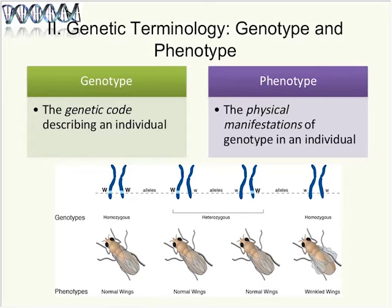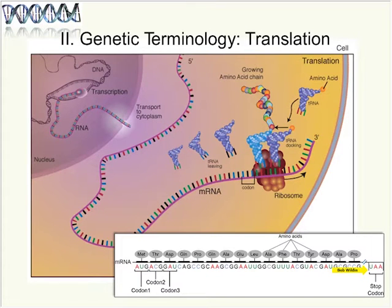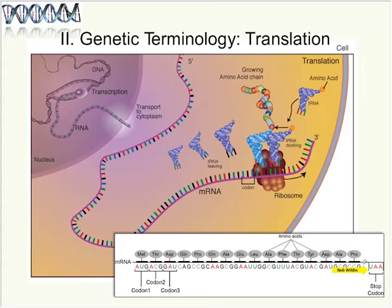Proteins are the things important in making cells work. They have many different types of functions: structural elements, enzymes that catalyze biochemical reactions, regulatory factors both inside and outside the cell, receptors, signaling molecules, hormones, and more. Their information is all encoded in the genome.